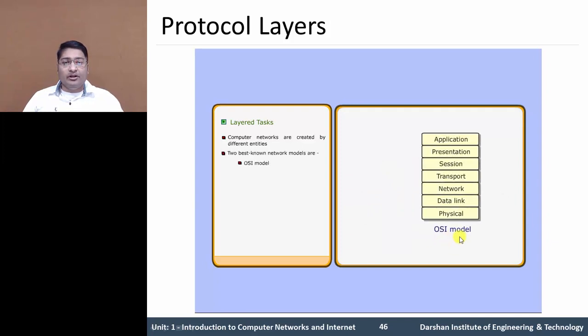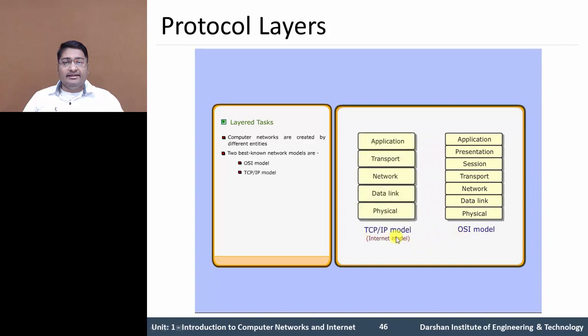We have two different well-known network models. The first one is OSI model and the second one is TCP/IP model. The OSI model consists of seven layers total, and TCP/IP model consists of five layers. TCP/IP model is also known as the internet model.